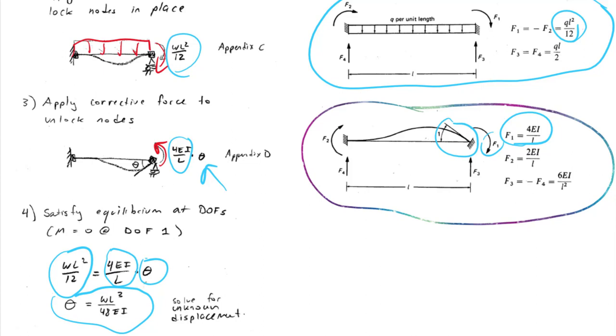We'll notice that W is a distributed load in kips per foot, say. L is a length in feet. E is a modulus in KSI. And I is a moment of inertia in inches to the fourth. All of them are presumably given in the problem. We can plug numbers in and we can get a value for theta.